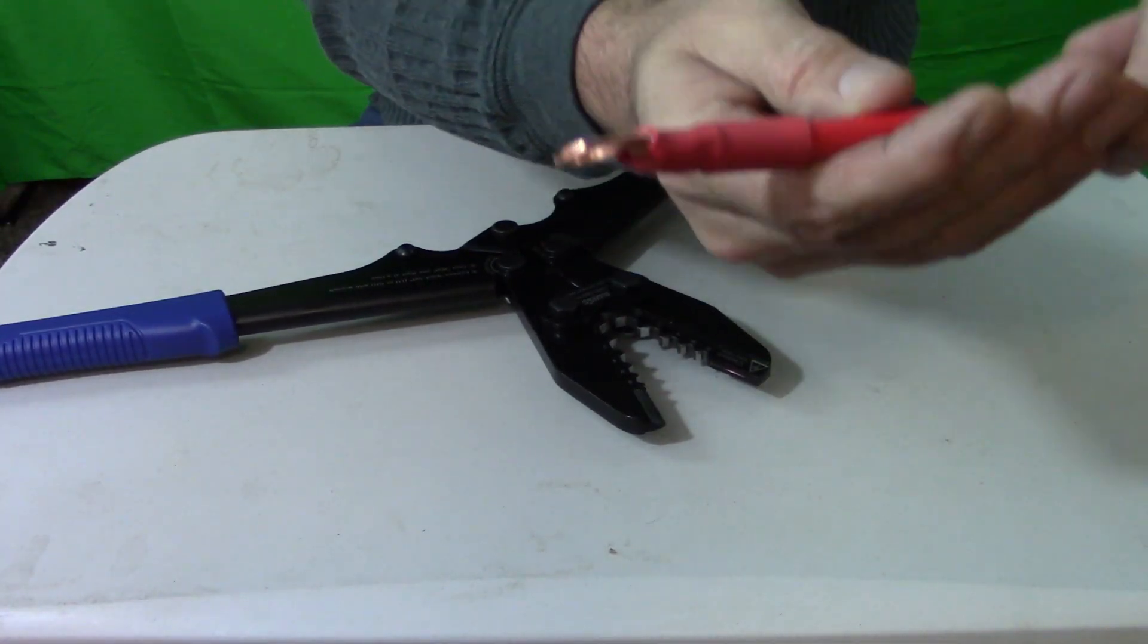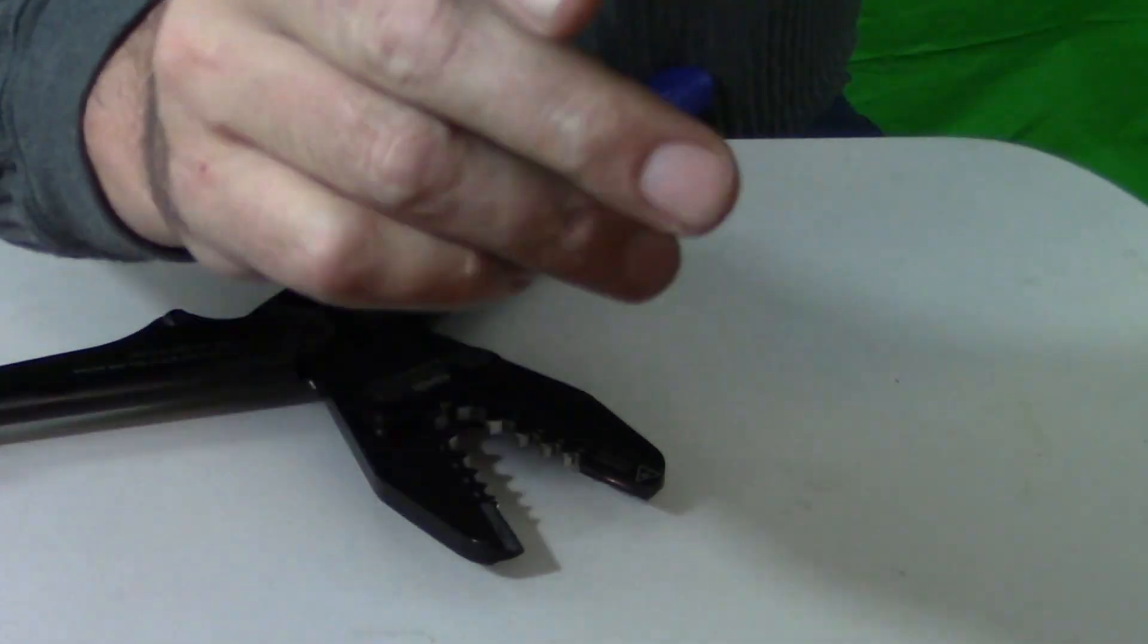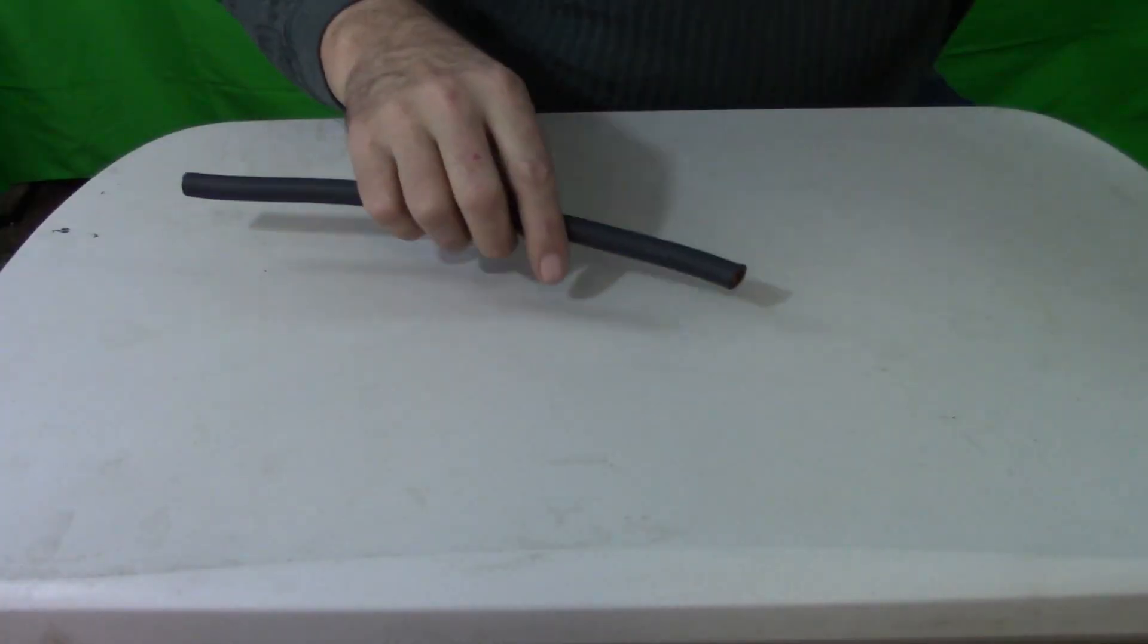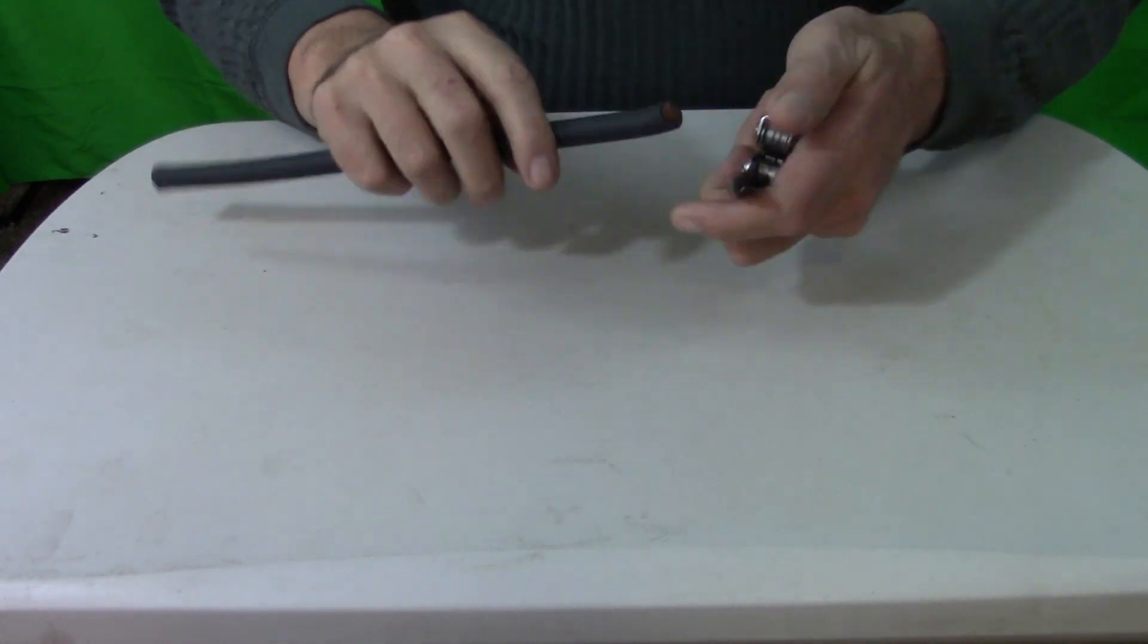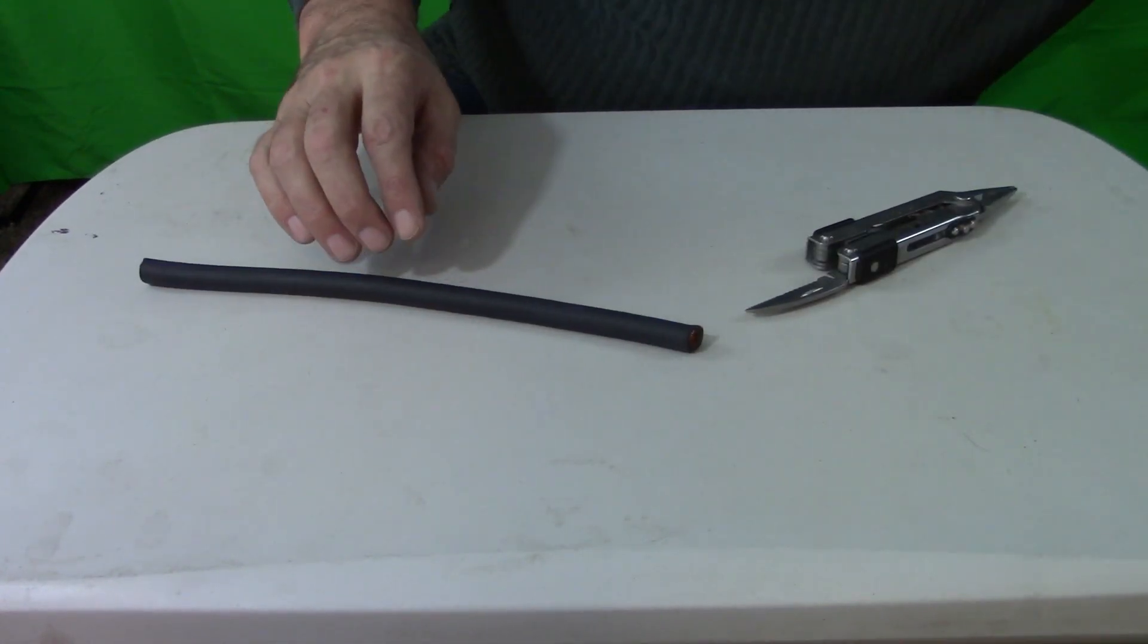There is some adjustments on the crimper itself that you can do to kind of adjust how much pressure is put down. So if it was over crimping, you could loosen it up just a little bit. But you saw right there, just using a heat gun, I went ahead and shrunk my tube over it. Now that tubing has some sealant, adhesive in it. So as it heated up, it softened and it actually kind of bonded to the wire and to the lug.